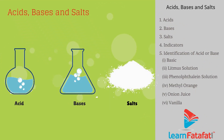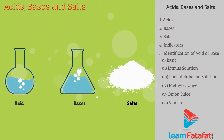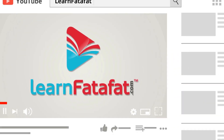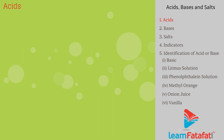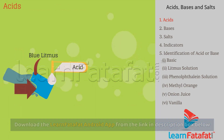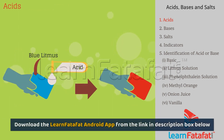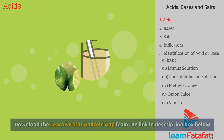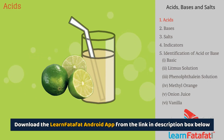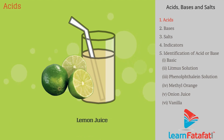Acids, Bases and Salts. Acids are the chemicals that turn blue litmus to red. Acids are sour in taste — for example, lemon juice.